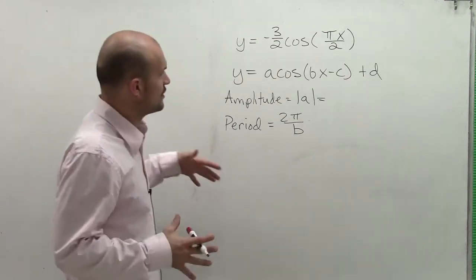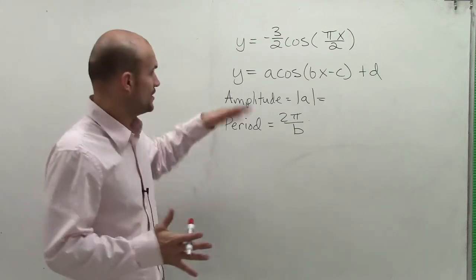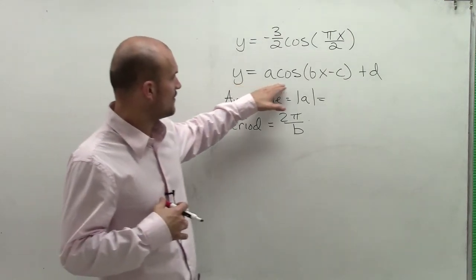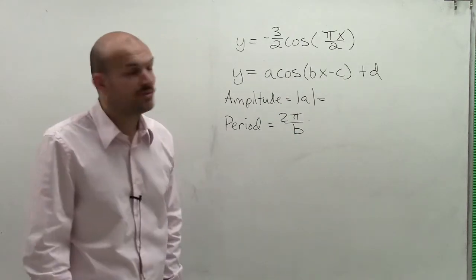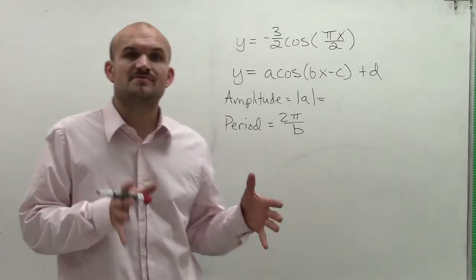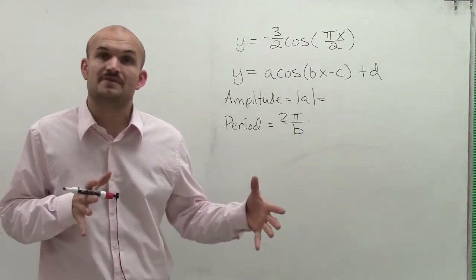So what I did is I already wrote some previous information from another video. The standard form of our function is y equals a times cosine of b times x minus c plus d. And remember, each one of those values affects our graph in different ways.